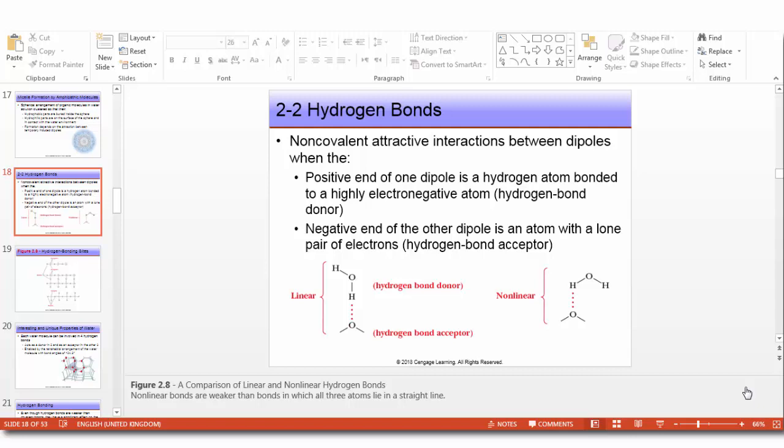We continue with section 2-2: hydrogen bonds. Hydrogen bonds refer to non-covalent attractive interactions between dipoles when the positive end of one dipole is a hydrogen atom bonded to a highly electronegative atom such as hydrogen, nitrogen, or fluorine, and the negative end of the other dipole is an atom with a lone pair of electrons such as nitrogen, oxygen, or fluorine.